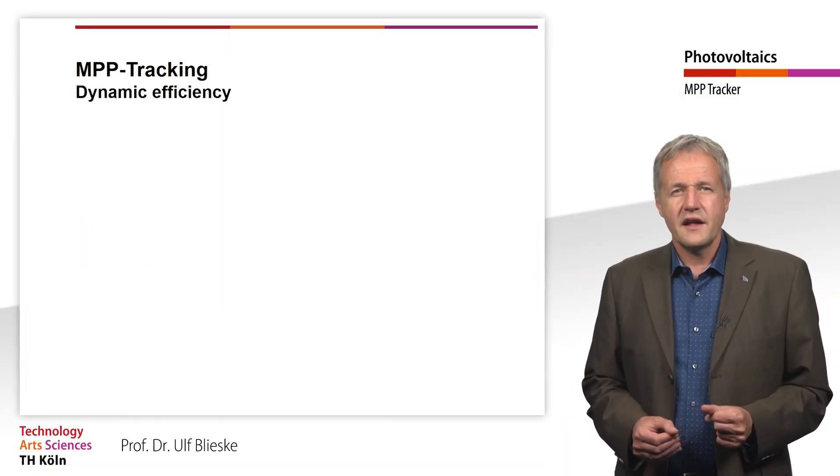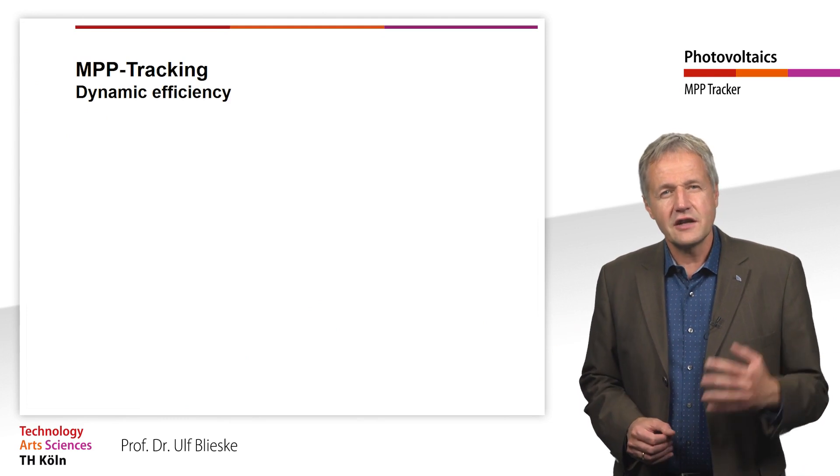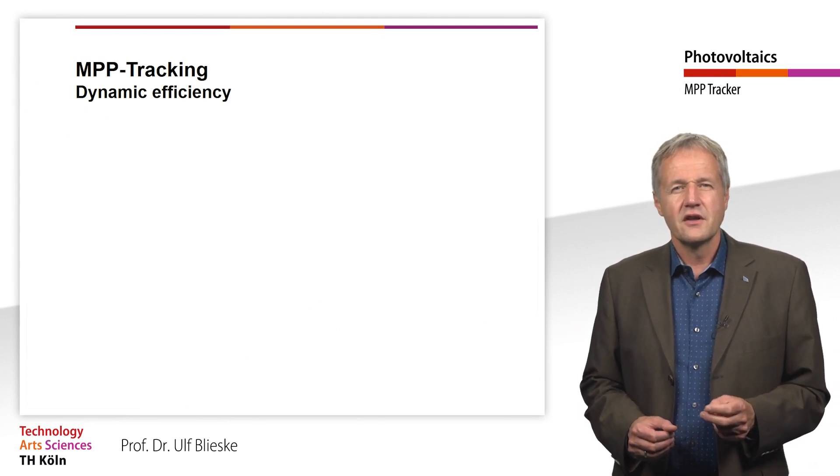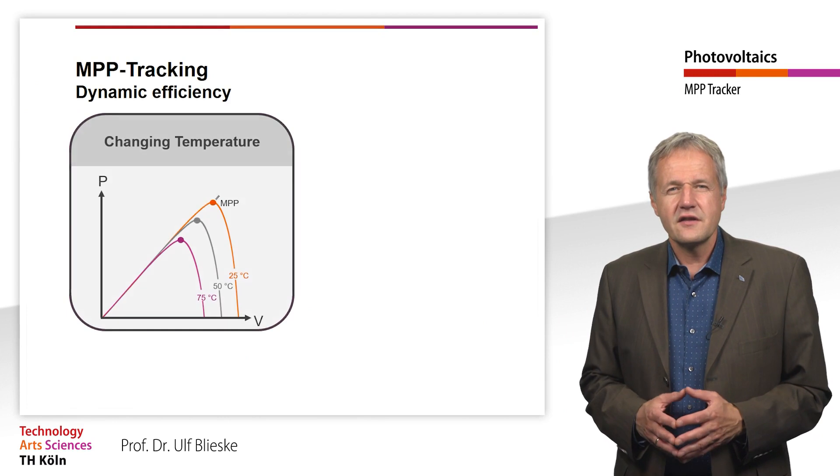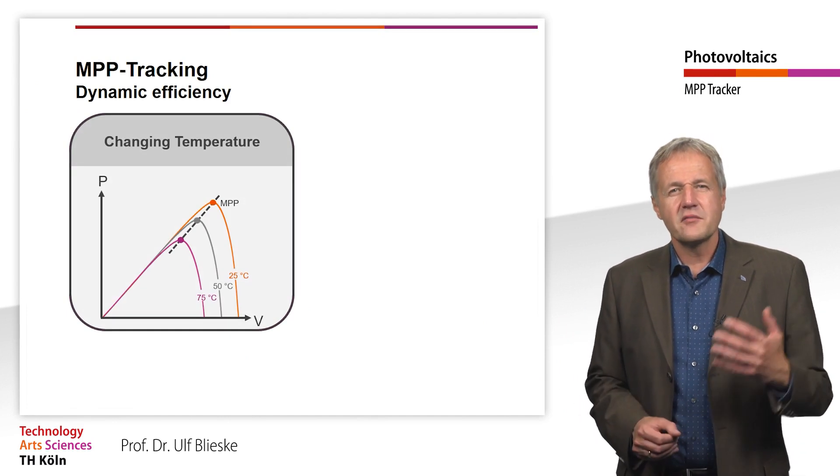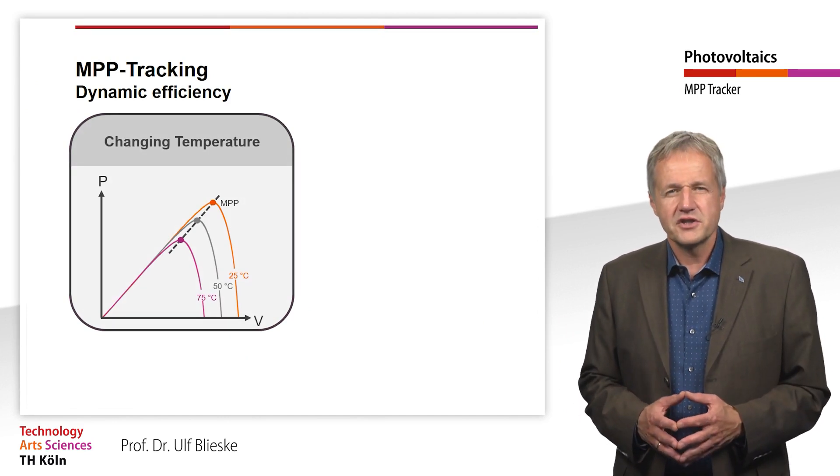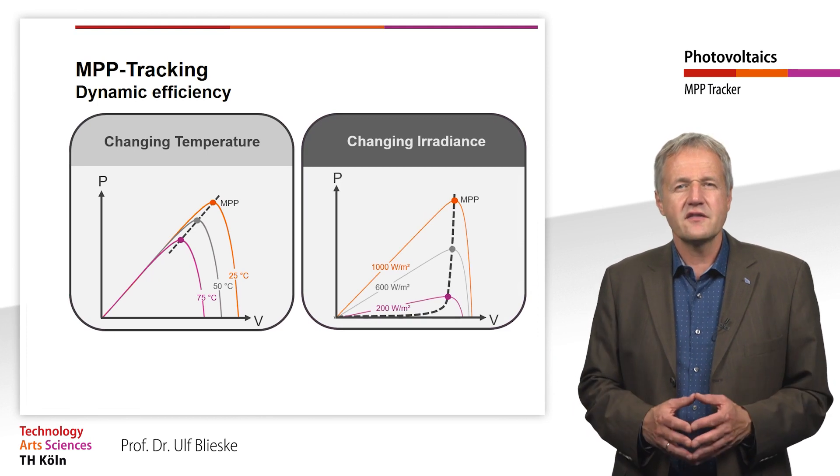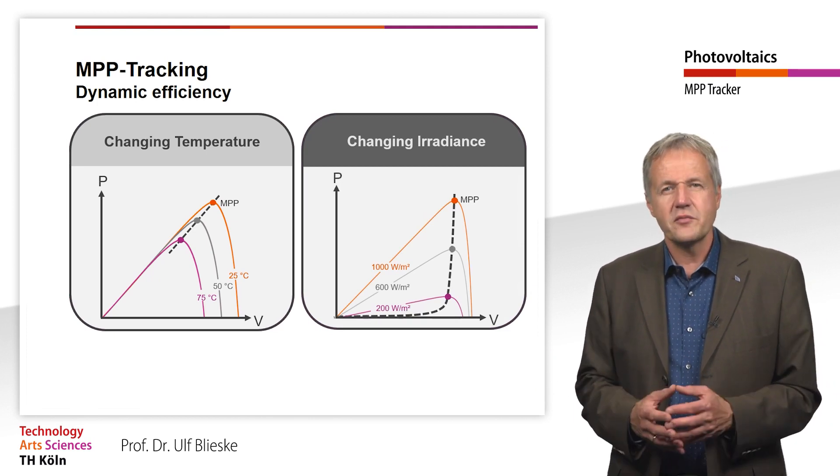Let's take a closer look at the environmental conditions that influence the MPP voltage. You already know that the voltage of a solar module depends mainly on the module temperature, while the irradiation has a rather small, namely logarithmic influence.